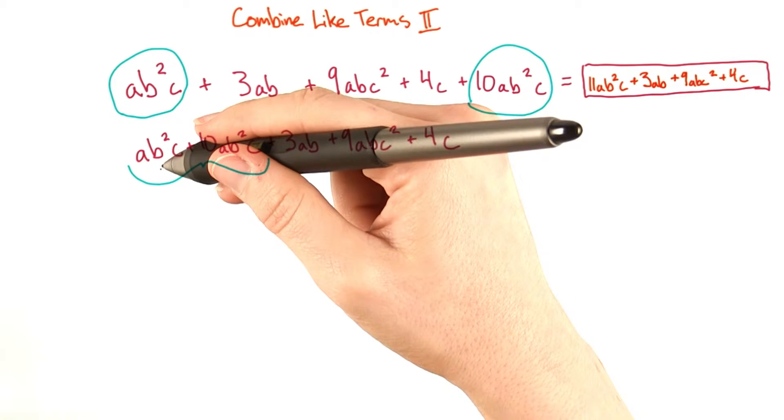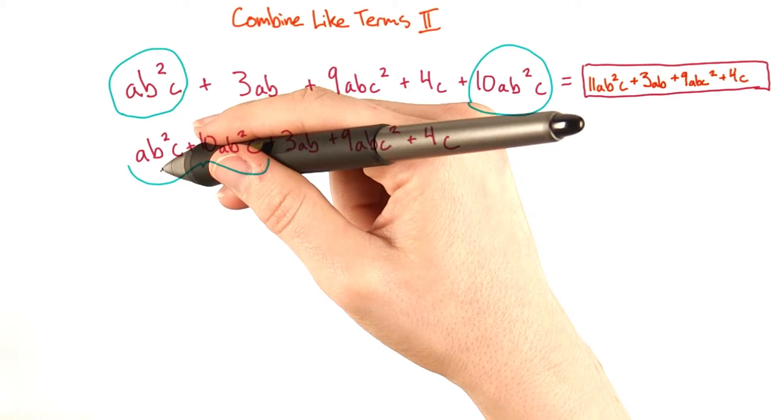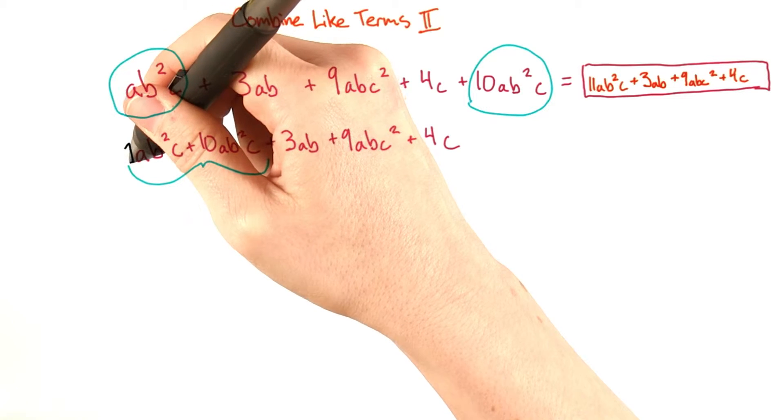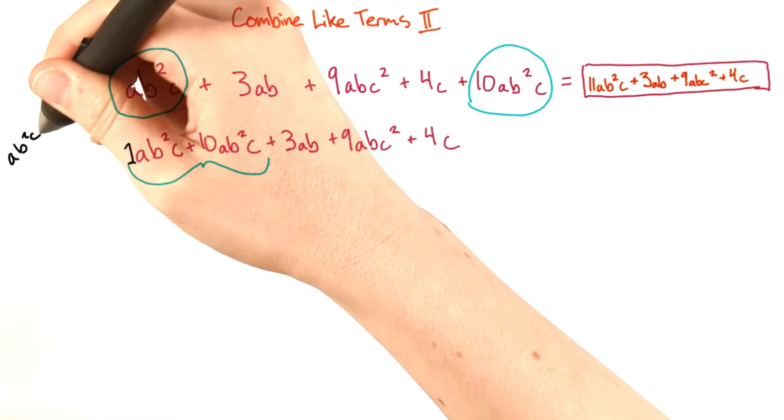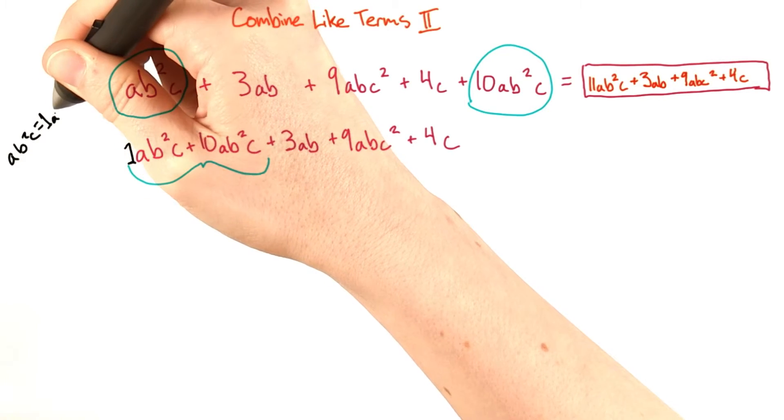Note that if there is no coefficient shown in front of a variable, the coefficient is implied to be 1. So ab squared c actually equals 1ab squared c.